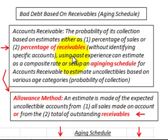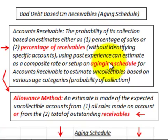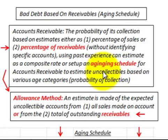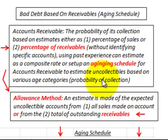This is going to be where we use past experience. You can estimate it either as a composite rate or set up this aging schedule. For accounts receivable, we estimate uncollectibles based on various age categories and the probability of collection for each category in this aging schedule.